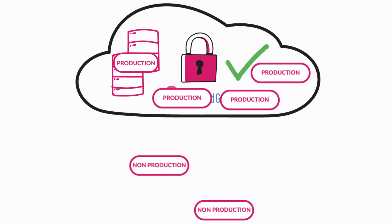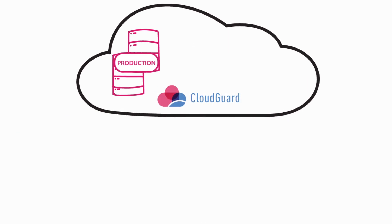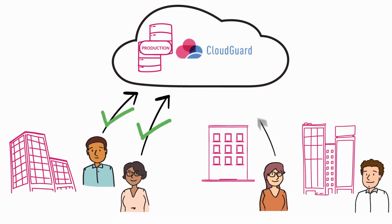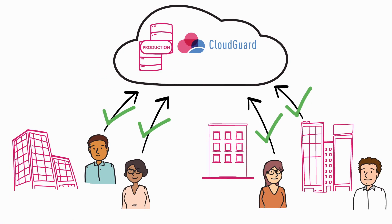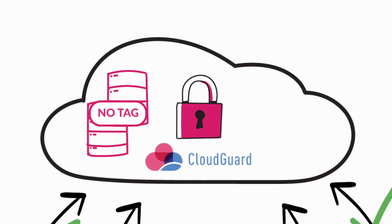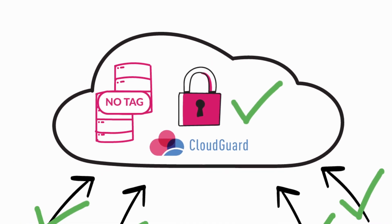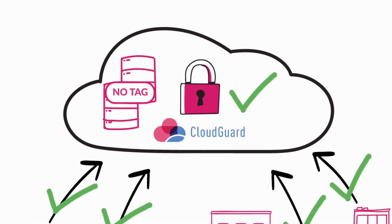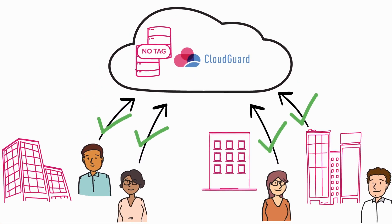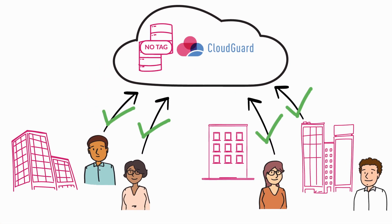By using tags, no policy push is required. Security policy is applied dynamically without any manual intervention. And CloudGuard protects the organization even if no tag is defined, because the cloud asset will automatically get the default security policy, which is typically a default drop rule or a set of very restrictive rules, fully protecting you from rogue or improperly configured cloud assets.